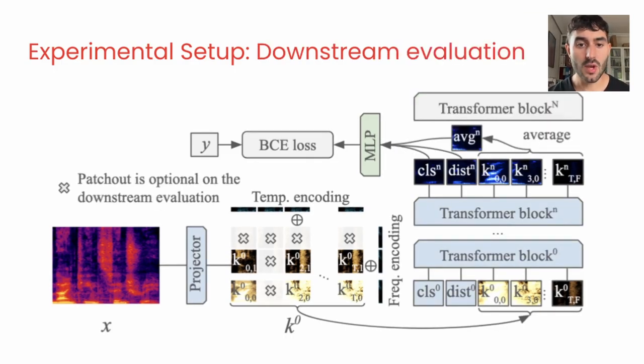In the downstream validation, we use the frozen transformer as a feature extractor and train an MLP classifier in the downstream task. In our experiments, we consider extracting different tokens from different blocks of the transformer and applying patchout at inference time.